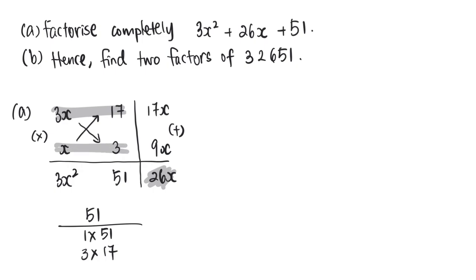So for part A, the answer would then be (3x + 17)(x + 3).